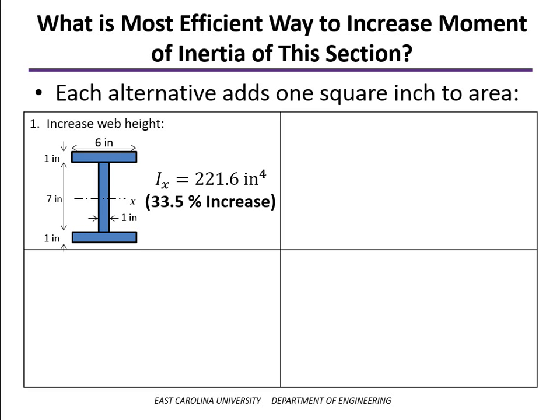We've looked at a couple of alternatives, each of which adds one square inch to the total cross-sectional area. The most efficient way would be to increase the overall height of the beam. If we increase the web height from 6 inches to 7, we find the moment of inertia increases by about 33.5%.